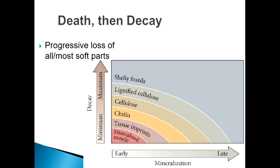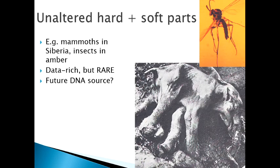Let's look at some types of preservation. If you actually have unaltered hard and soft parts — mammoths in Siberia, insects in amber — these things are very data rich but extremely rare. Are they a future DNA source? Can we resurrect these things by cloning them? I don't know. Certainly not now. I'm going to try to find a link to show you a couple of recent finds that have popped up out of the ground in Russia that are like this.